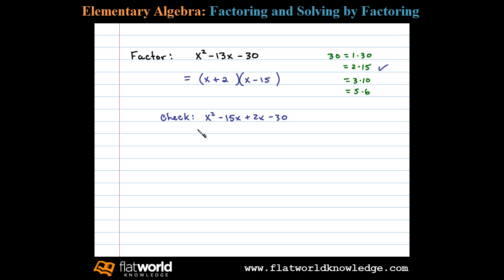Simplifying, we have x² - 15x + 2x = x² - 13x. That's good. And then -30. So we can see that this factorization checks out.